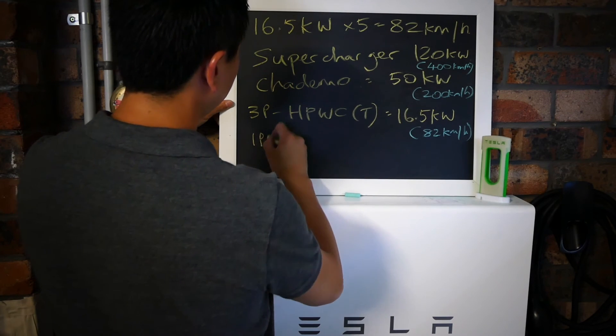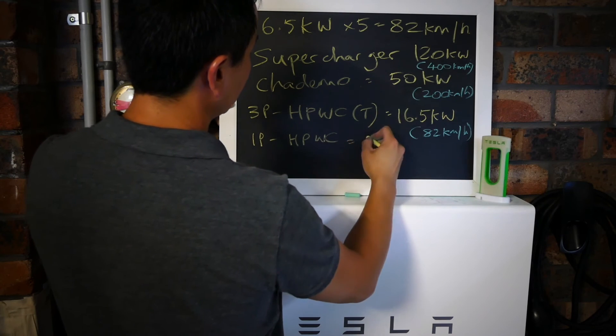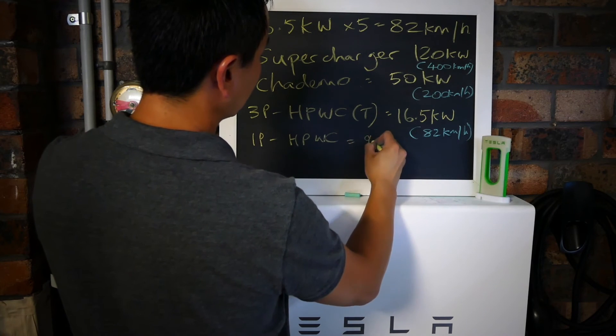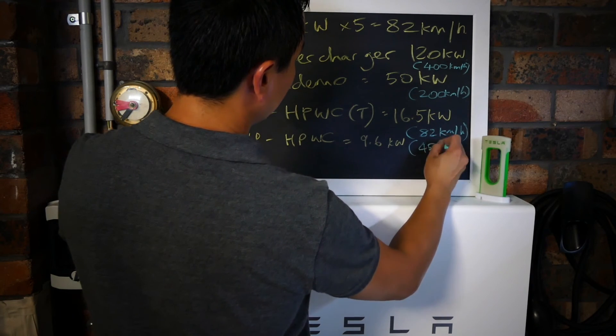A single phase, if you don't have a three-phase home HPWC, gets you 9.6 kilowatts, which is 45 kilometers an hour.